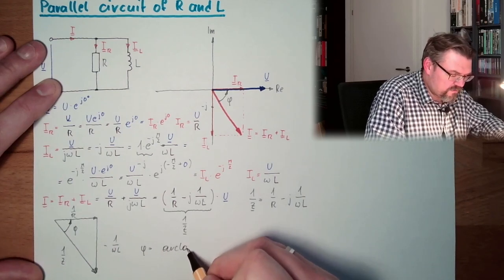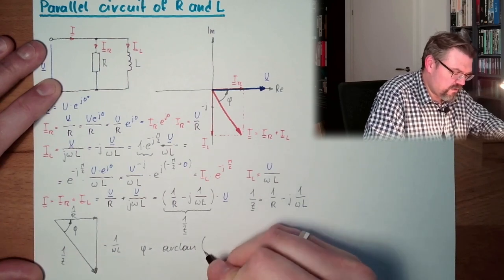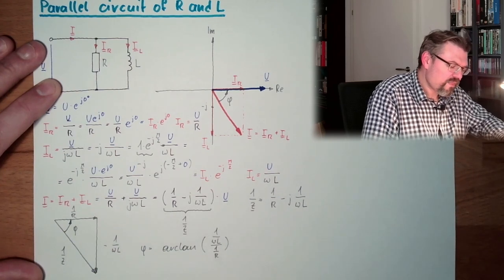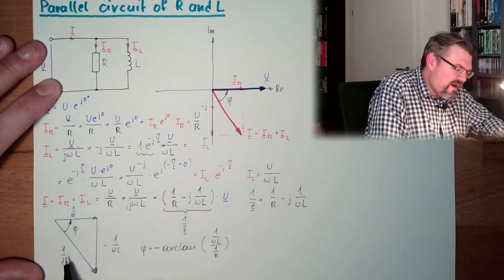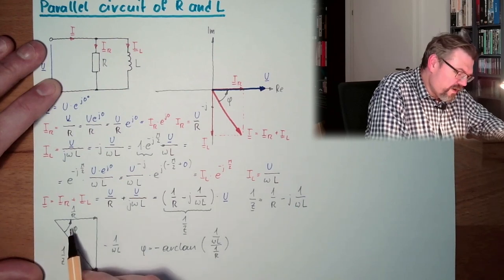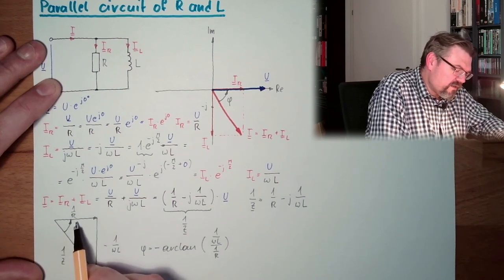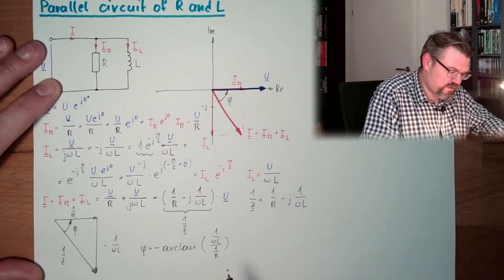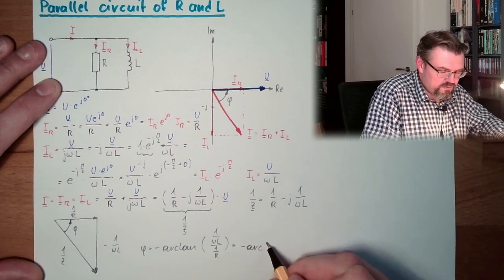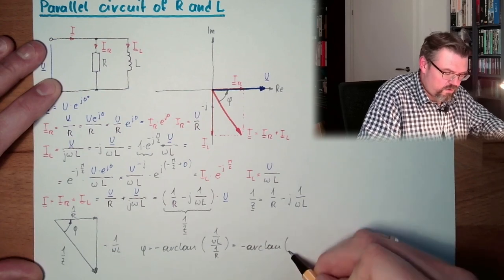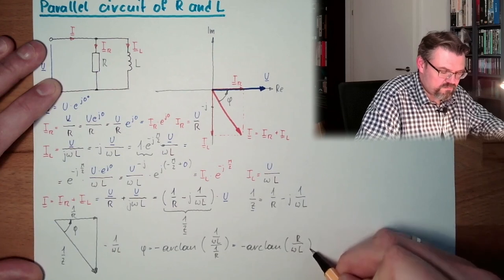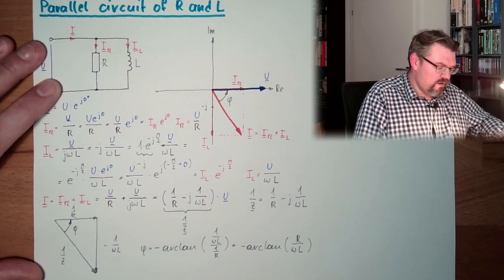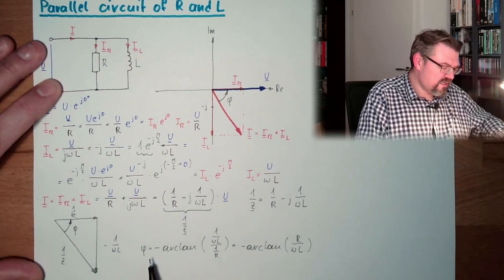Let's see what our phi always calculated. We have R, opposite divided by adjacent. So we have 1 divided by omega L divided by 1 divided by R, and we have minus. Because we have 1 divided by Z, so we are going actually in this direction. We are not calculating the value from here to here, we are calculating from here to here. So we have to use this minus here. Minus R cotangent, and now we have here R divided by omega L.